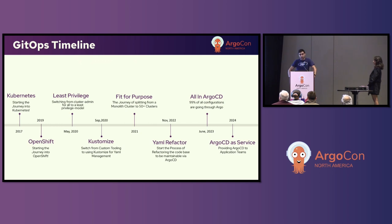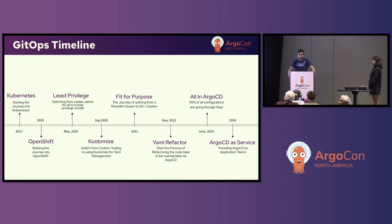Previously, the entire team had cluster admin access to all the secrets, et cetera. This led to some disastrous effects. So we switched to a more least-privileged model with a subset of the team having access, as well as granting increased access on an as-needed basis. Later that same year, we switched over to using Kustomize to manage our YAML manifests. Previously, we were using shell scripts, and that ended up becoming extremely complicated. At that time, we were also only managing two monolithic clusters — a non-production and production — which contained all of our workloads of various differing performance characteristics.